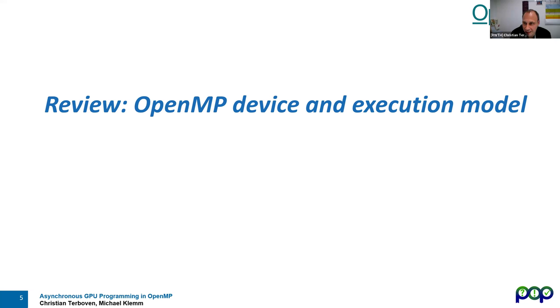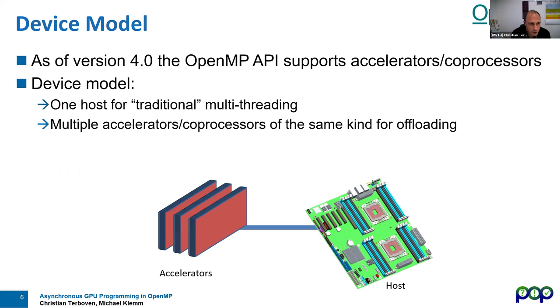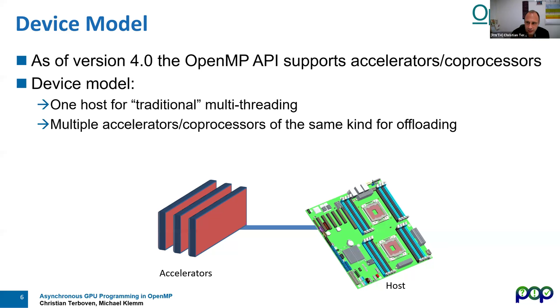Let's review the OpenMP device and execution model. OpenMP introduced support for accelerators many years ago — initially talking about accelerators and coprocessors. These are currently primarily GPU devices, but OpenMP in principle also supports DSPs and many other devices. The terminology was not specifically tailored to GPUs, though that is the primary market.